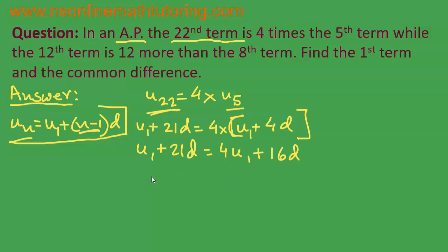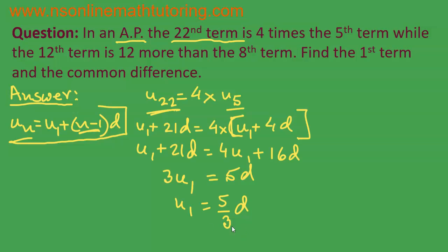From this we can get a relation between u1 and d. 4u1 minus u1 gives us 3u1, and 21d minus 16d is equal to 5d, so u1 is equal to 5 over 3 times d. This is the relation between the first term and the common difference of this arithmetic sequence.